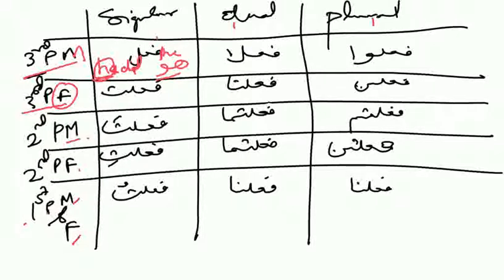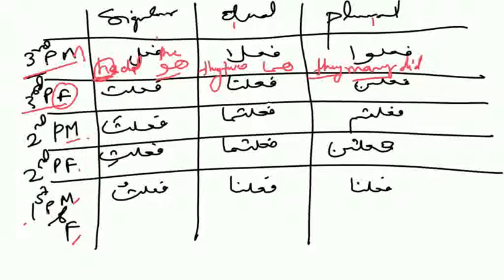And we are saying that Fa'ala means 'they two did.' 'They two' refers to the Zamaayr Huma hidden in it. Similarly, in Fa'alu we say 'they many did.' The 'they many' is the Zamaayr hidden in Fa'alu, known as Hum — indicating third person masculine plural. And the Zamaayr hidden in Fa'alu is Hum.